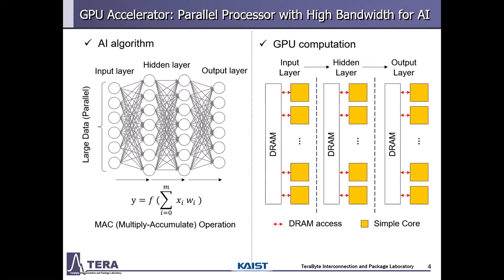GPU accelerators are widely used for AI applications based on parallel processing with high bandwidth memory. As shown on the left, in an AI algorithm the input layer contains large parallel data. Through MAC operations, hidden and output layers are calculated. In each layer, all MAC operations are independent, so it is possible to compute in parallel. As shown on the right, thousands of cores in a GPU compute one layer in parallel, and a large number of cores access DRAM at one port of data.